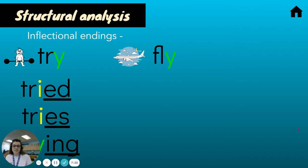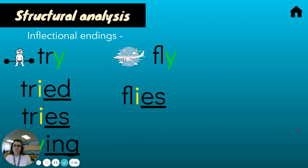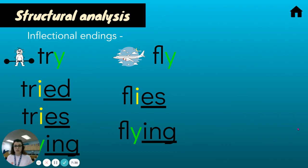'Fly.' If I wanted to say 'she flies home tomorrow,' I would have to change that Y to an I and add ES. But 'flying' — like if I wanted to say 'I am flying out tomorrow' — all I would have to do is add ING. I wouldn't have to change my Y.